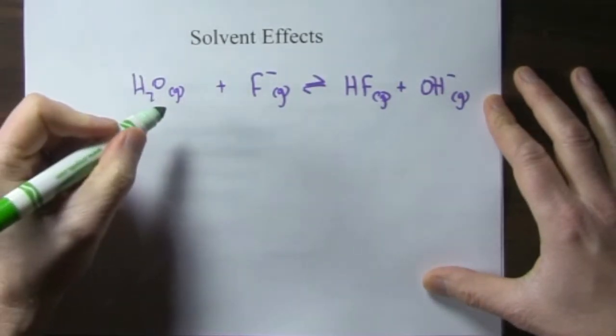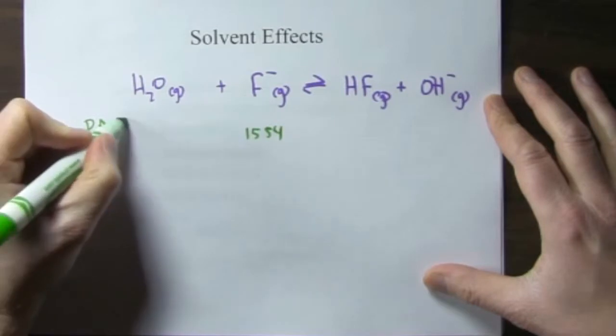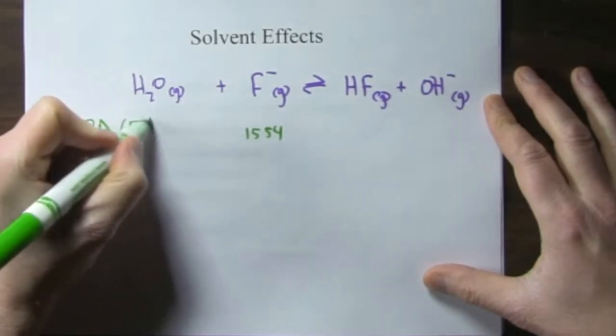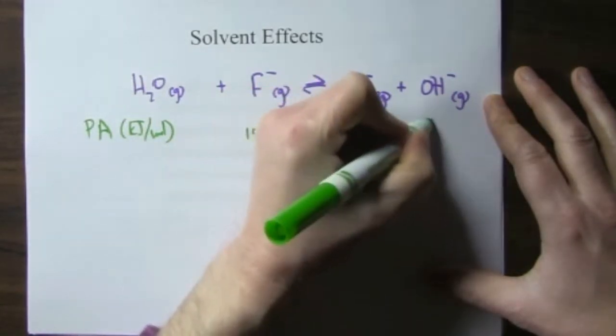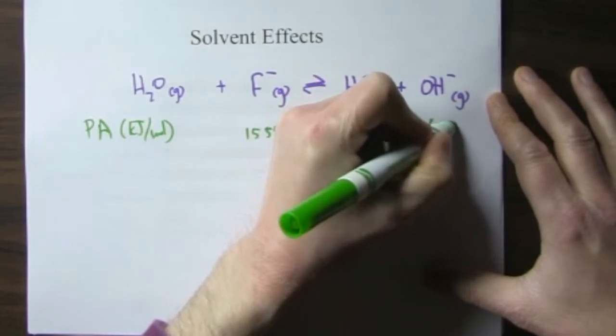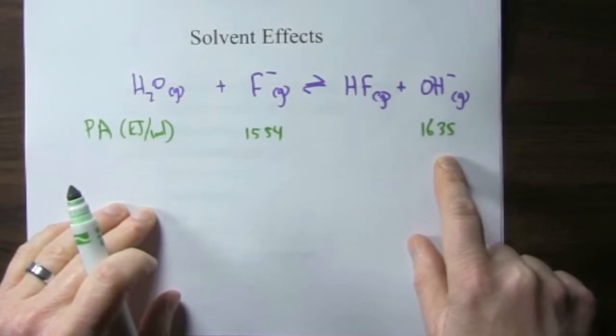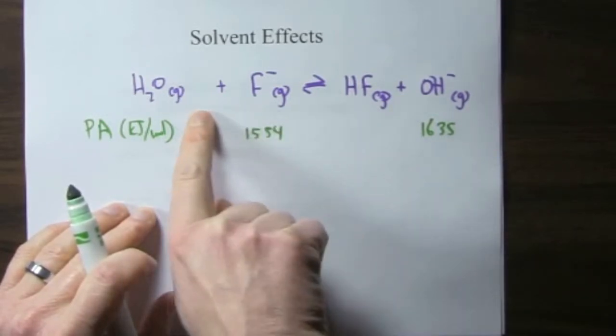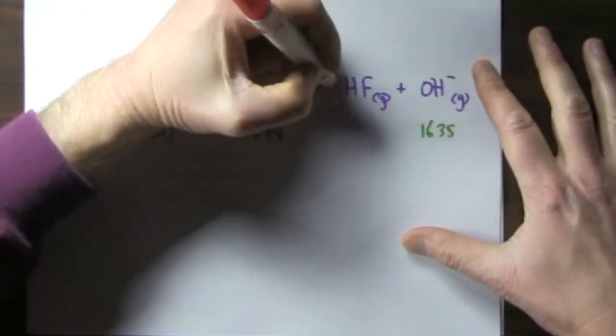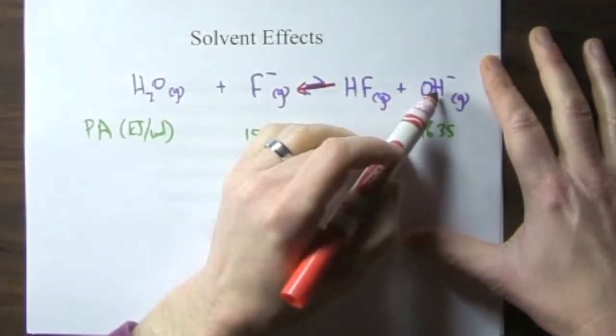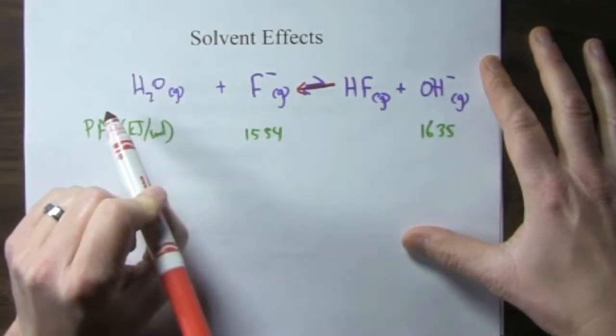And the proton affinity values for fluoride, 1554, in terms of kilojoules per mole. And the proton affinity for hydroxide is 1635. So the product here has a stronger affinity for the proton than the reactant. So we would expect the reaction to proceed in this direction. Hydroxide wants to gain that proton more than the fluoride. So it's going to force the reaction to go this way.